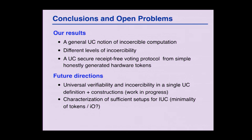Some open problems: this work is motivated by e-voting, and another very relevant property in e-voting is verifiability. There is currently no definition of composable verifiability, let alone a joint definition of verifiability and coercibility — that's something we're working on. A second interesting open question: I argued that a CRS is not sufficient for incoercibility, and our solution uses a powerful hardware token. Where is the line? Can we find even weaker setups that are still sufficient for incoercibility? There is hope that indistinguishability obfuscation (iO) might be usable there, since the whole goal is that one can lie about what's inside.